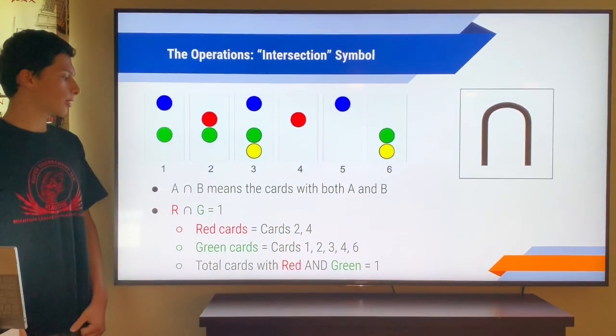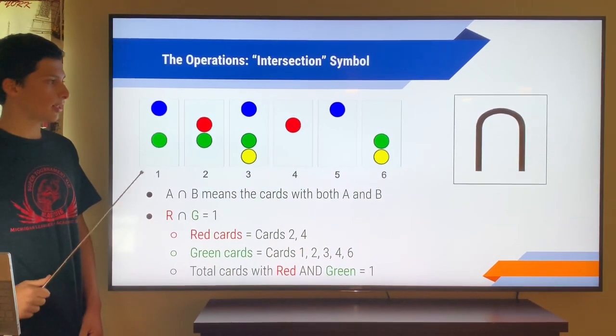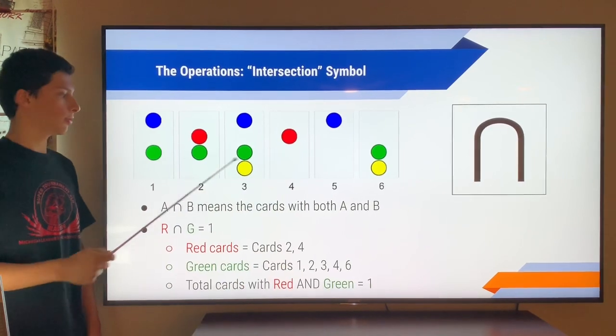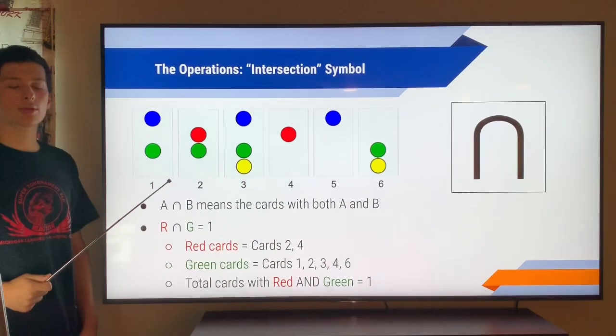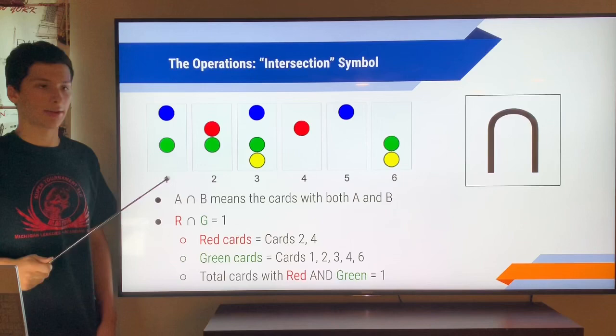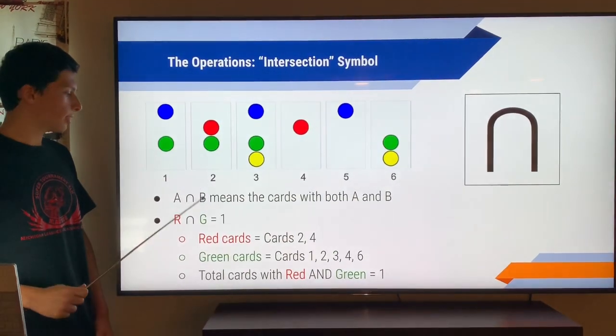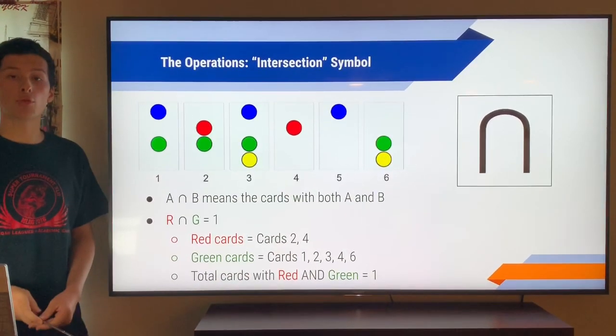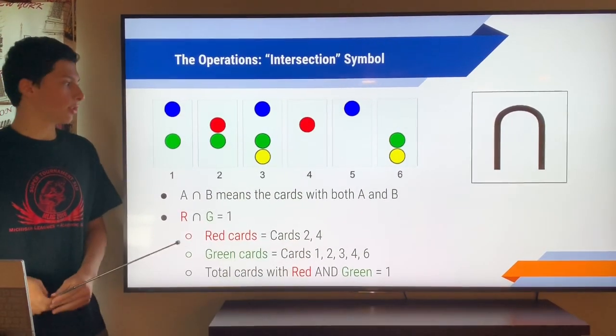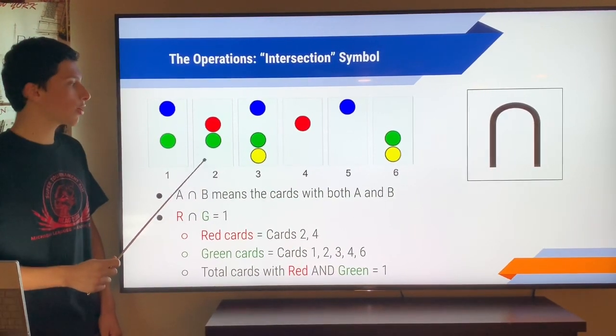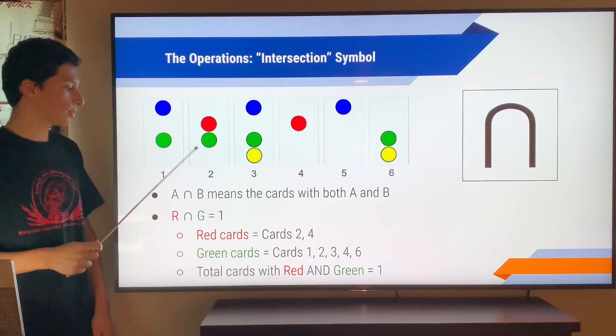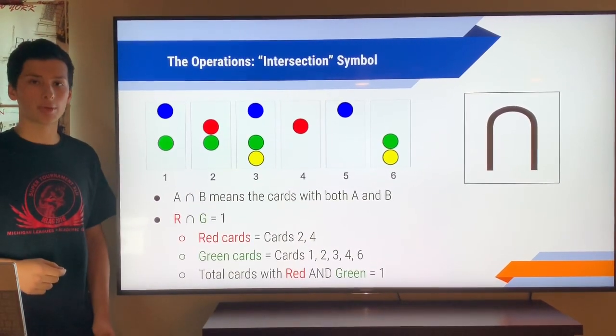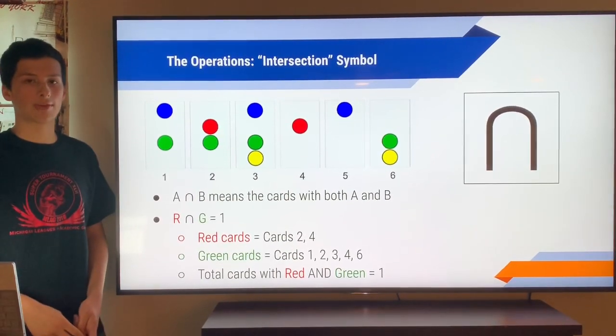The next operation is the intersection symbol. This one is represented by a symbol opposite to OR, which is this upside-down U. So it's also commonly referred to as AND, like A-N-D, the letter. So let's take an example, red AND green. So we're going to look at all the cards that have both red AND green in them. I can see that only card 2 contains both red AND green in it. So the answer to this would be 1. Notice how red OR green is 5, and red AND green is 1. They have different operations, they get different values.